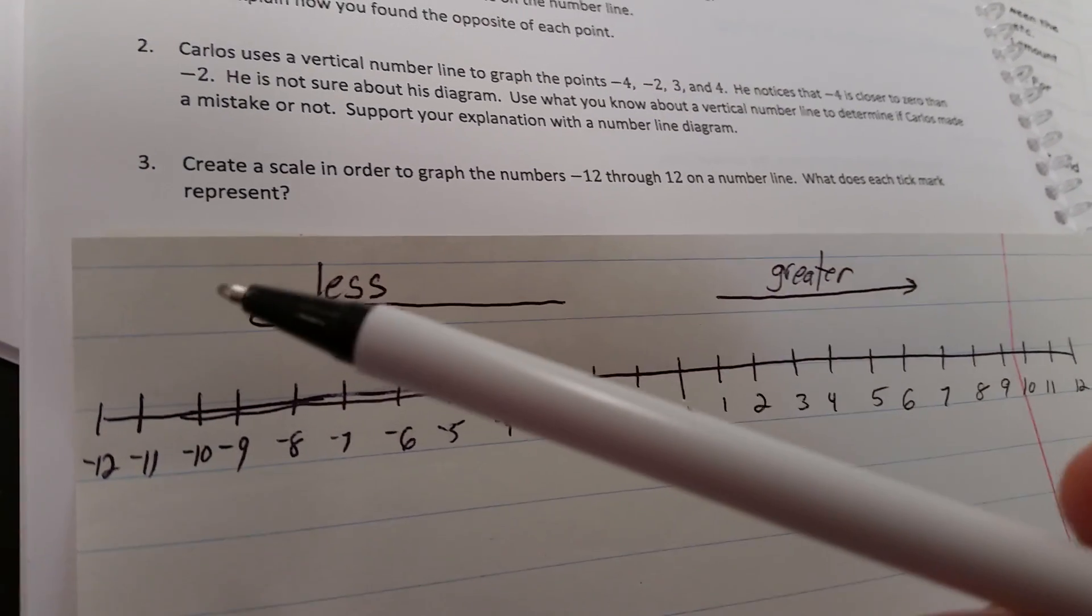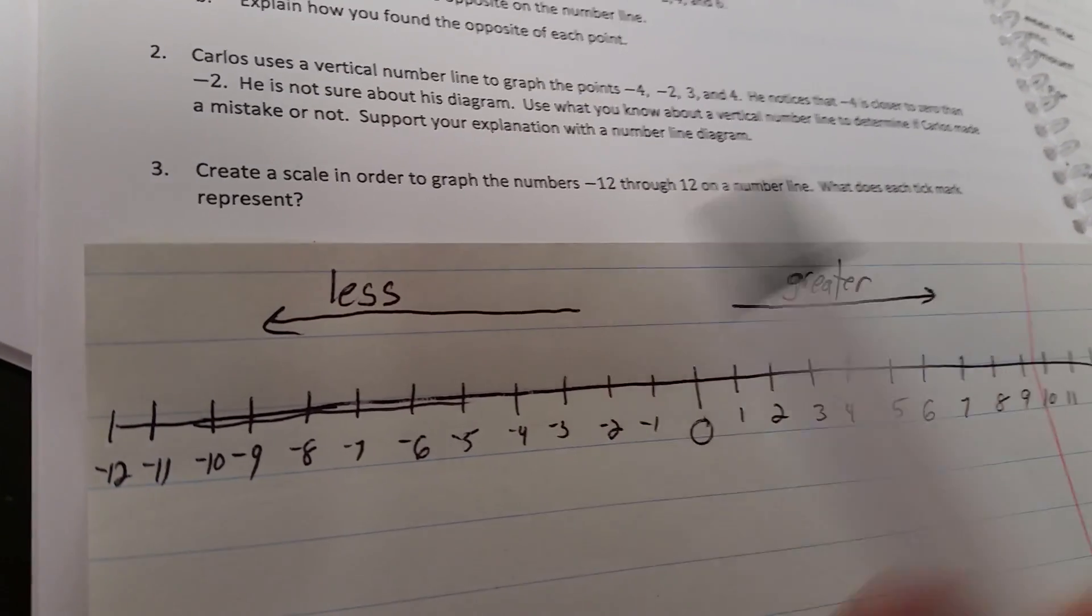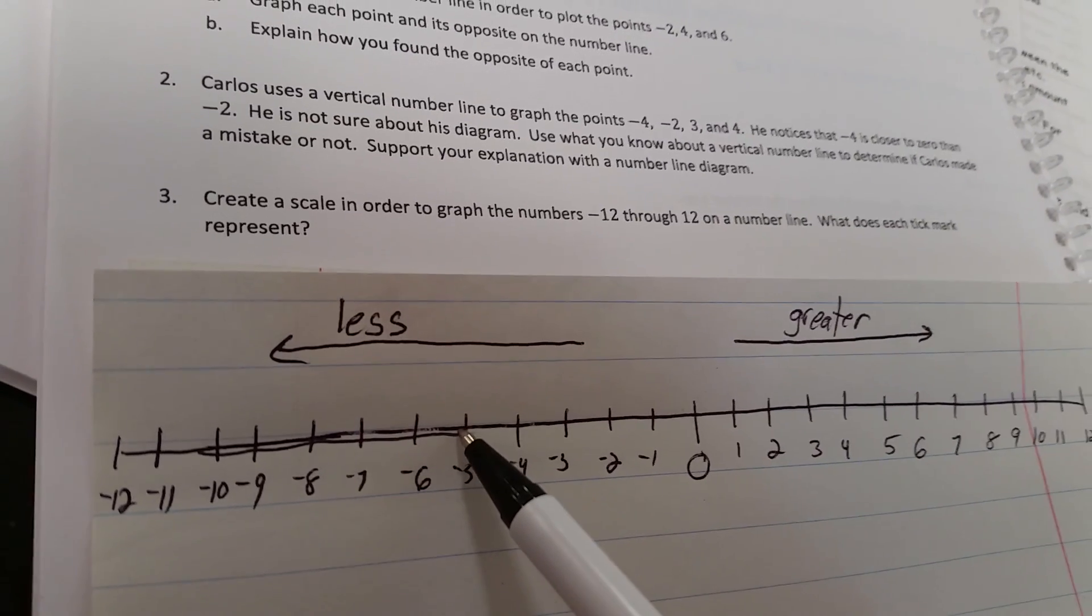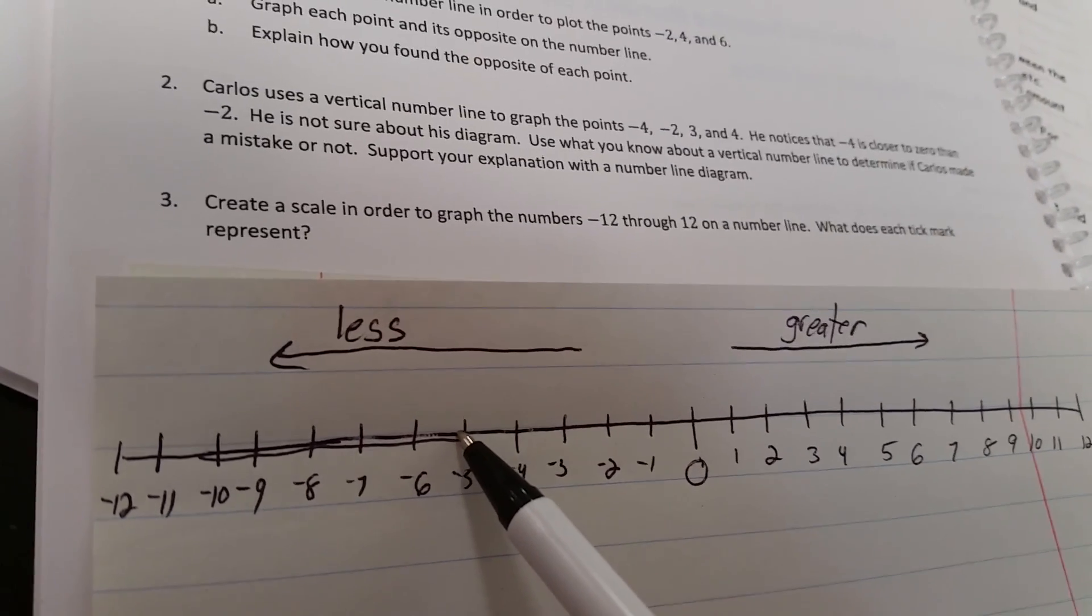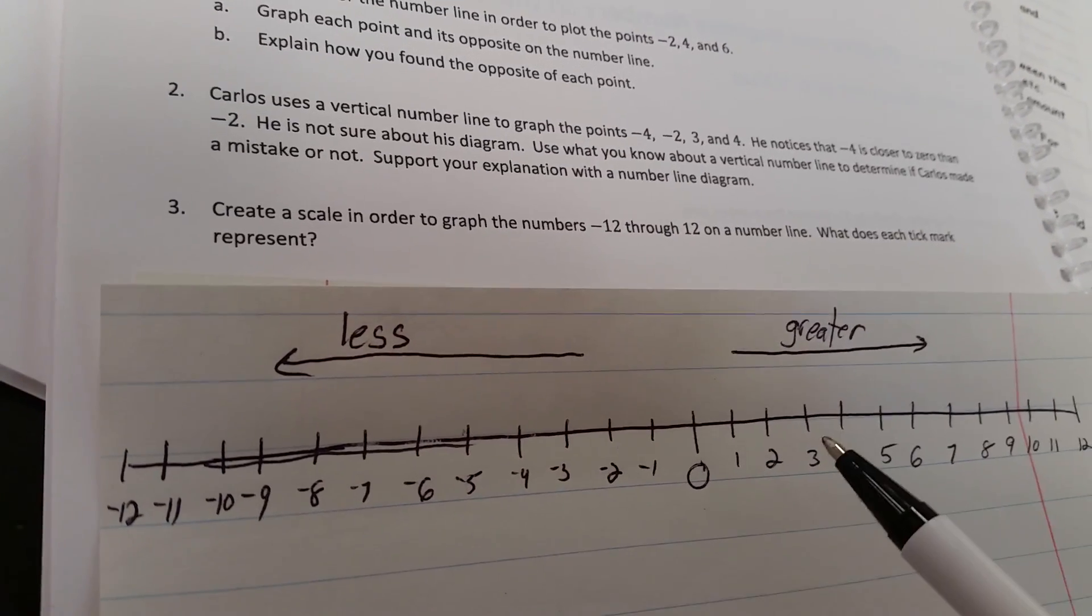As you move to the left on your number line, these numbers now are less. So any mark you put on, let's say negative 5, any mark that's to the left of negative 5 is going to be less than this value. Anything to the right is going to be greater than that value.